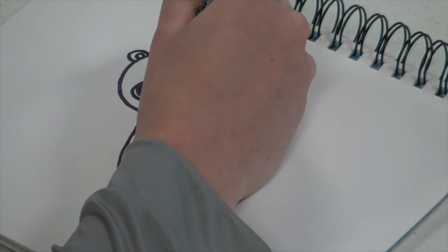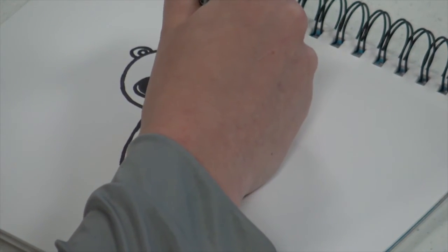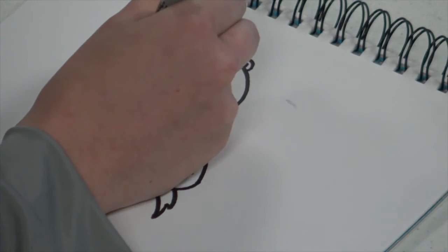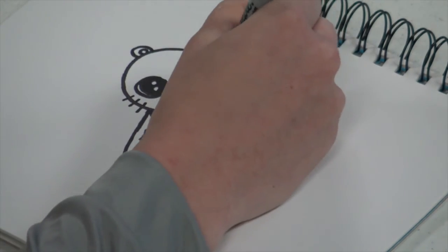Then you're gonna add a W shape for the mouth that connects at the bottom of the nose. And then I like to add three little whiskers at the bottom of the face on each side.